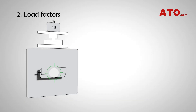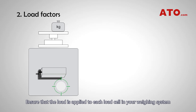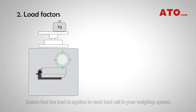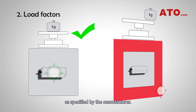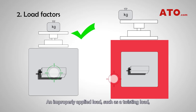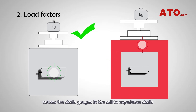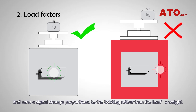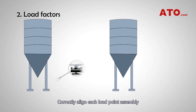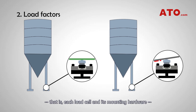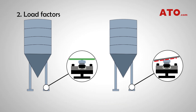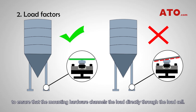Load factors. Ensure that the load is applied to each load cell in your weighing system as specified by the manufacturer. An improperly applied load, such as a twisting load, causes the strain gauges in the cell to experience strain and send a signal change proportional to the twisting rather than the load's weight. Correctly align each load point assembly — that is, each load cell and its mounting hardware — to ensure that the mounting hardware channels the load directly through the load cell.